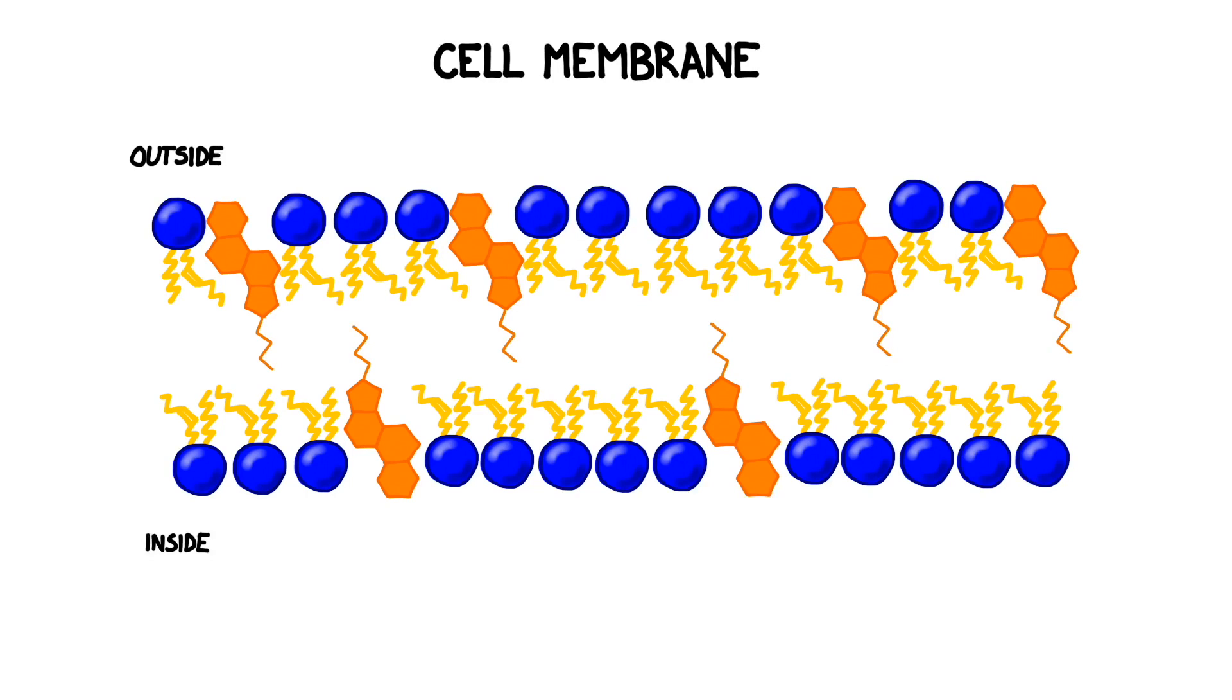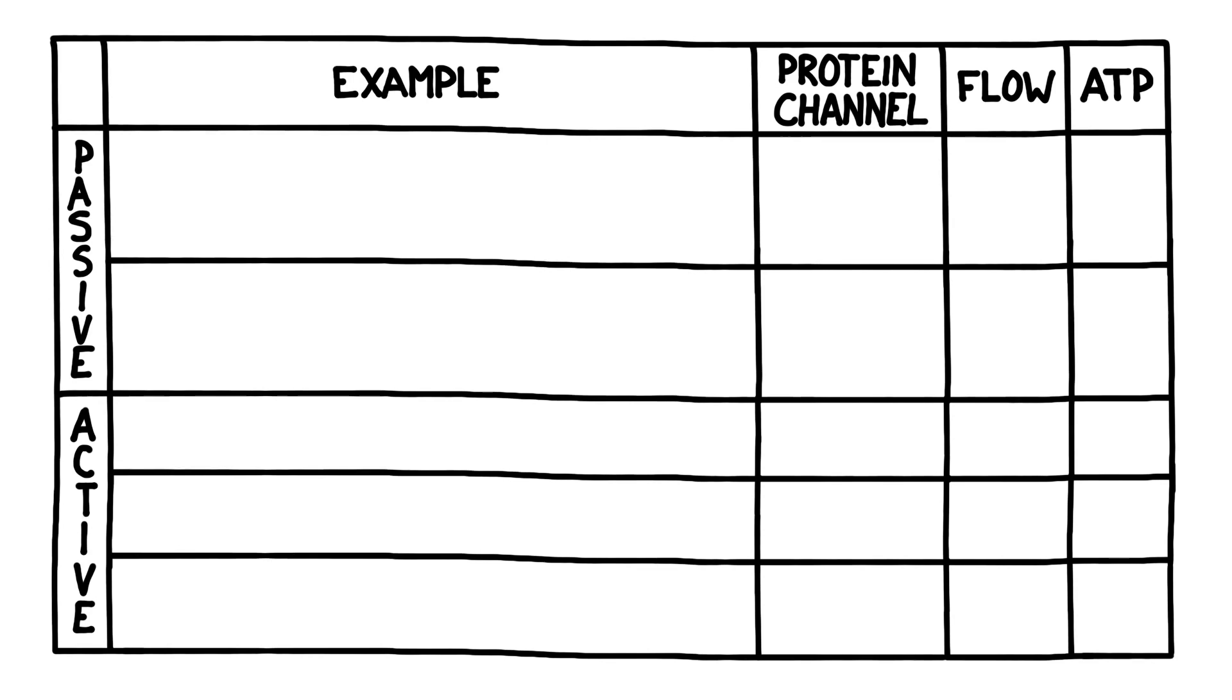Remember that cells are surrounded by a double membrane made of phospholipids and cholesterol. This barrier is excellent at stopping most molecules from passing through, while still allowing certain particles to cross. As we go through the different types of particle transport, we'll be keeping our information organized in a grid that looks like this.